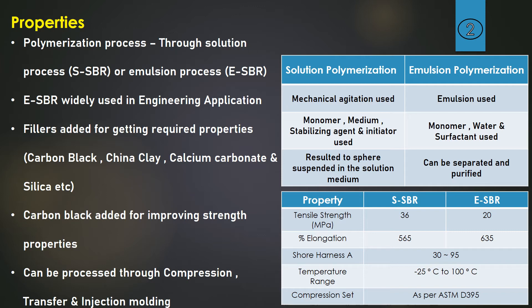Let us understand the difference between solution polymerization and emulsion polymerization. In solution polymerization, mechanical agitations are used, and monomer, medium, stabilizing agent, and initiators are used, resulting in particles suspended in the solution medium. In emulsion polymerization, emulsions are used with monomer, water, and surfactant, and the product can be easily separated and purified.